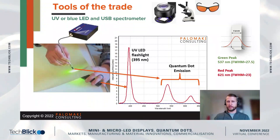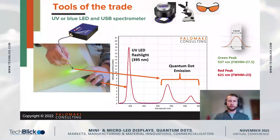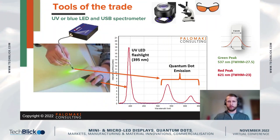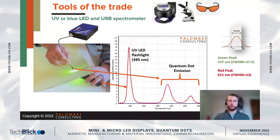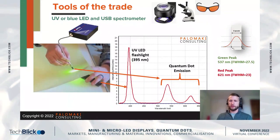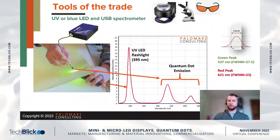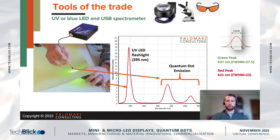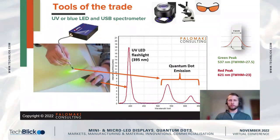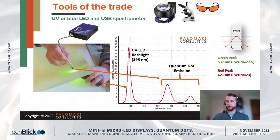In this example, the green is positioned at 537 nanometers with a full-width half max of 27.5 nanometers, and the red peak at 621 nanometers with a full-width half max of 23 nanometers. These are very narrow, very good emission spectra from quantum dots.